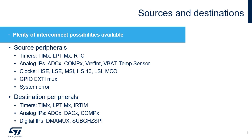The main peripherals having direct, autonomous interconnections are timers, analog IPs, clocks, GPIO, EXTIs/IRQs, and system error signals for the connection sources.